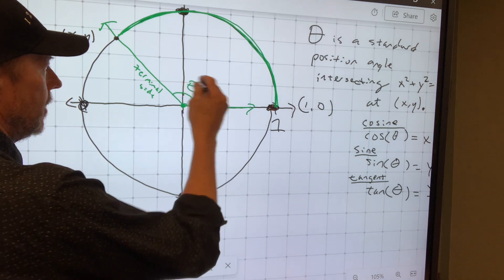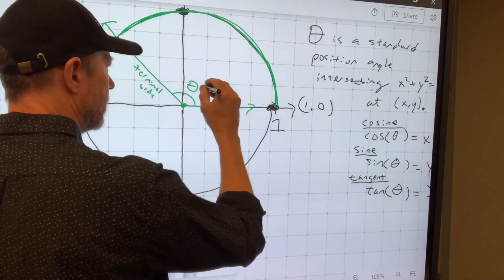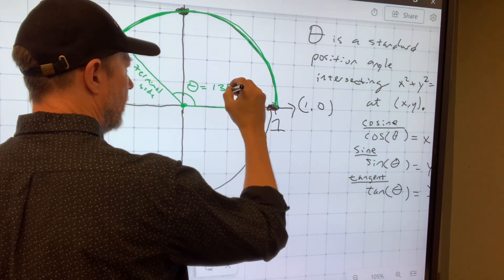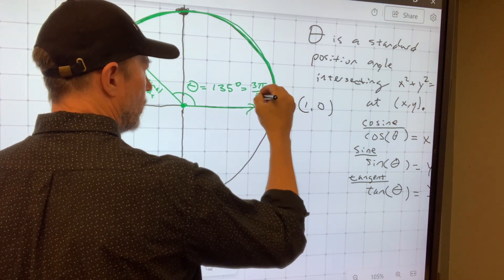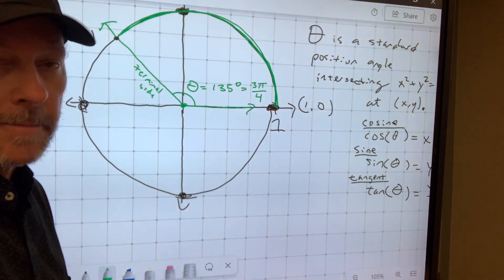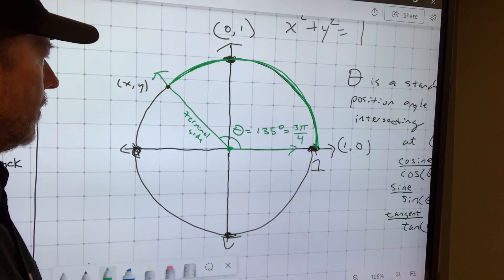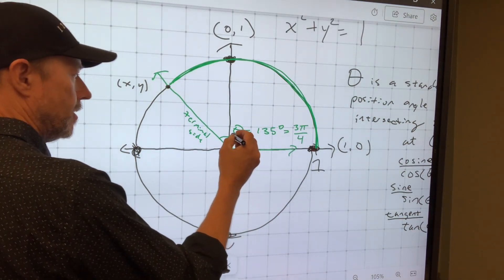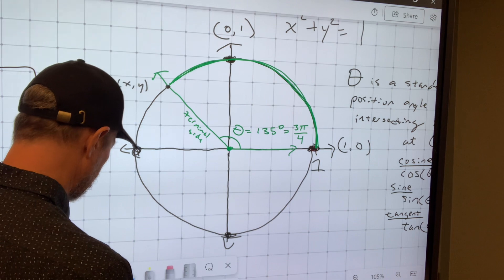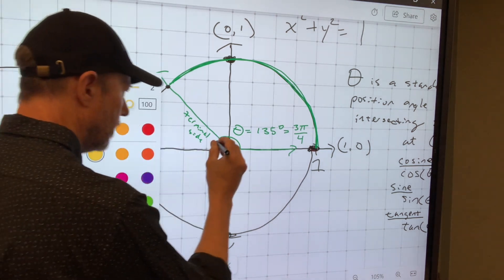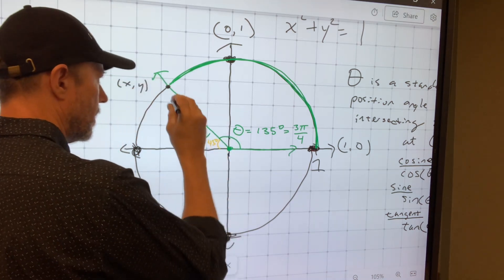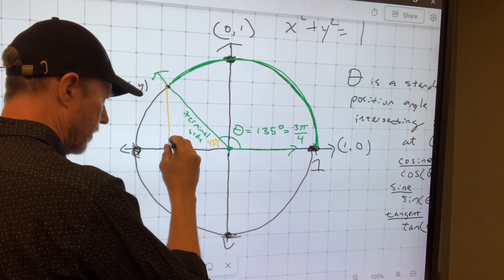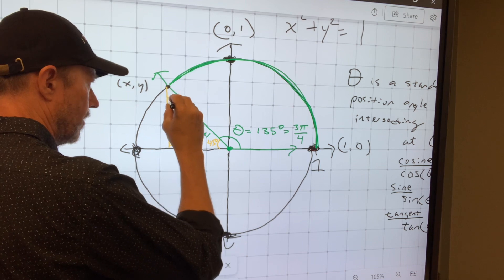Okay, let's do an example before we go. So this angle is conveniently 135 degrees, which is in radians 3π/4. Okay, now that means that this is 90 degrees plus 45. So this little reference angle here is 45 degrees or π/4. And if I drop it perpendicular so that this is 90, then this is 45.